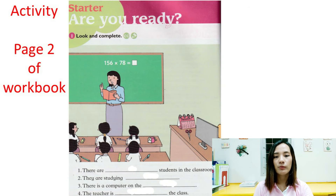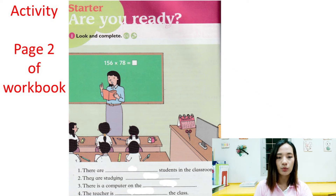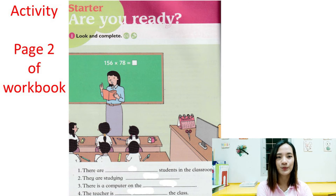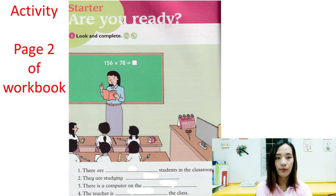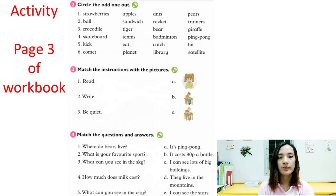Now let's move on to your book activity. Please open your workbook on page two. Number one: look and complete. We have a picture here — where is this place? Is it in the library, in the computer room, or in the classroom? The answer is in the classroom. So number one: there are blank students in the classroom. Count how many students you can see in the picture. There are six students in the classroom.